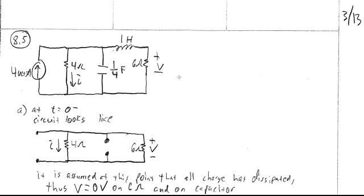In this case we are looking at I through the 4 ohm resistor and V across the 6 ohm resistor. Problem 8.5 asks us to find I(0+), V(0+), dI/dt at 0+, dV/dt at 0+, and the steady-state values I(∞) and V(∞).